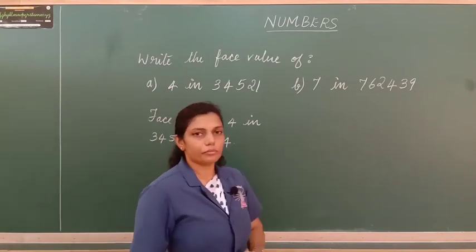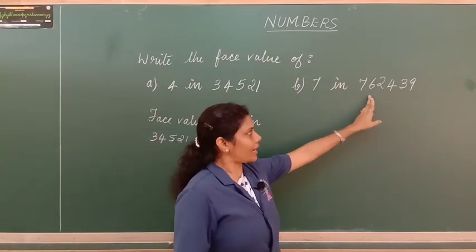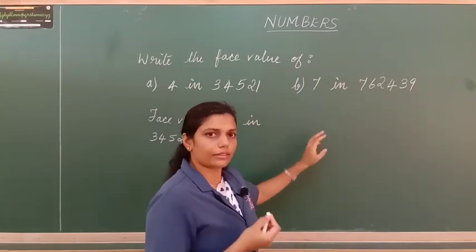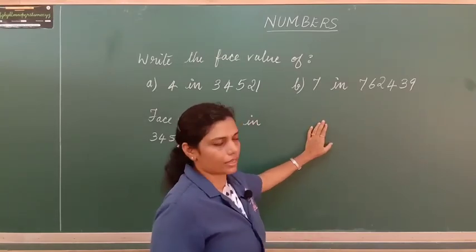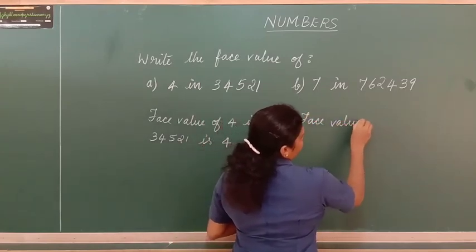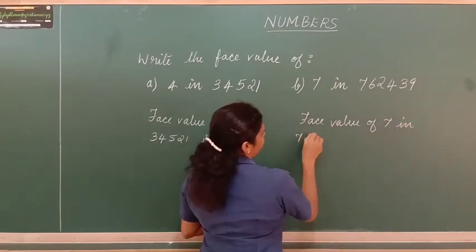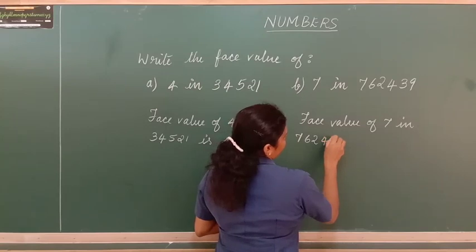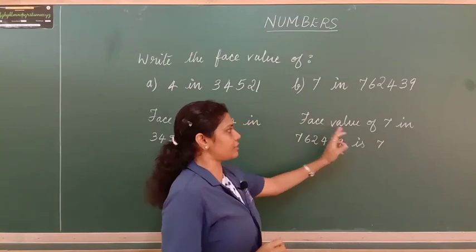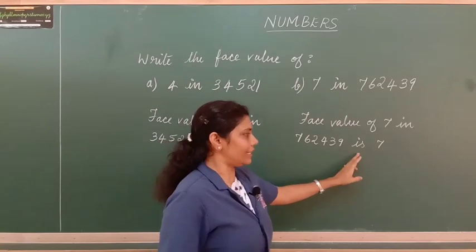Similarly, let us solve B. We have to write the face value of 7 in 7,62,439. As we know, the face value of 7 is 7 itself.